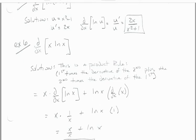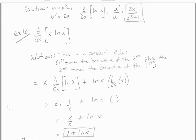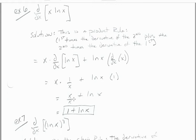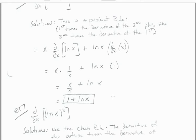Now we have the derivative of x times the natural log of x. This is a product rule — there's not really a way to rewrite this log to simplify it. It's first times the derivative of the second, plus the second times the derivative of the first. So it's x times the derivative of ln(x), which is 1 over x, plus ln(x) times the derivative of x, which is 1. That gives us x times 1/x, which is 1, plus ln(x) times 1. So our solution is 1 plus natural log of x.